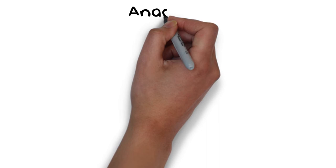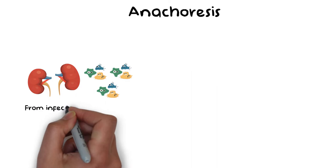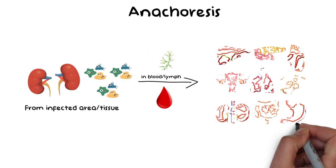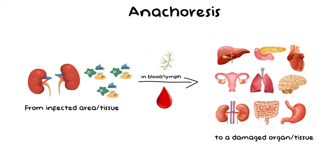Lastly, there is yet another process known as anachoresis, in which microbes are transferred from the blood or the lymph to a damaged tissue where they can establish an infection. It is suggested that anachoresis might be involved in root canal infection, but there is still no solid evidence to support this idea. It is nevertheless important to know about this process because it is mentioned in most of our literature.